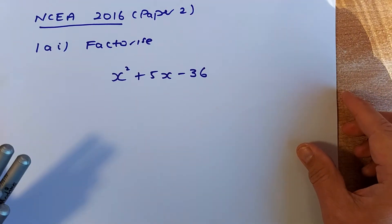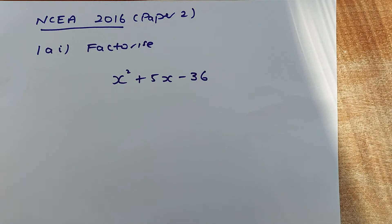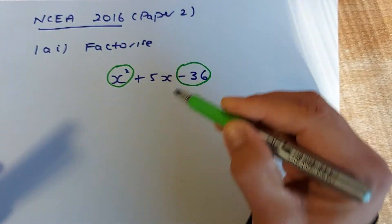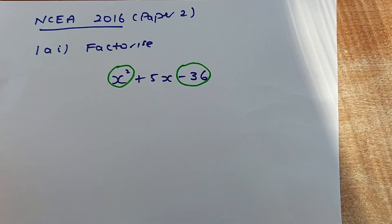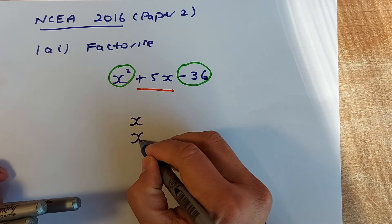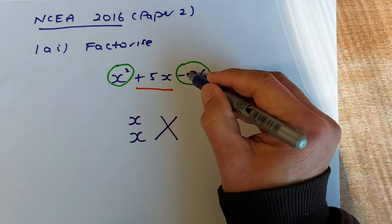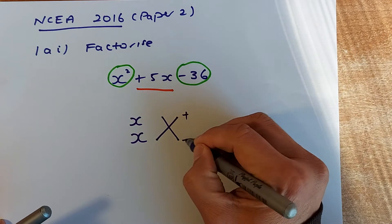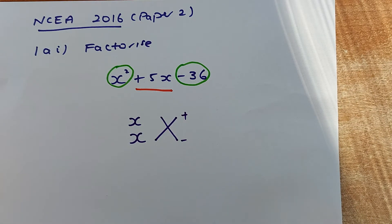The second example is also from the 2016 NCA, Paper 2. Step 1: put in the bubble — first block, second block — and your objective is to find the middle value, +5x. Again, x² is simple: put x and x. The factors of -36 must include one positive and one negative number, since multiplying a positive by a negative gives a negative. Your job is to find two numbers that multiply to give 36: possibilities include 2 and 18, 6 and 6, 4 and 9, and so on.